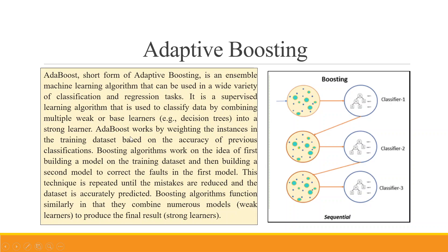AdaBoost works by weighing the instances in the training dataset based on the accuracy of previous classifications. Boosting algorithms work on the idea of first building a model on the training dataset and then building a second model to correct the errors in the first model.